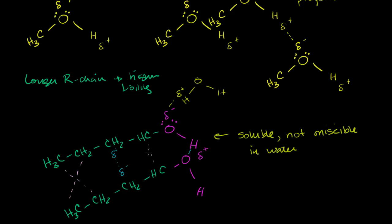Those are the two big takeaways on the properties of alcohols. Smaller-chain alcohols are soluble in water — the very small ones are completely miscible. The longer the chain, the harder it is to dissolve in water, but also the higher the boiling point, because London dispersion forces make the molecules harder to break apart.